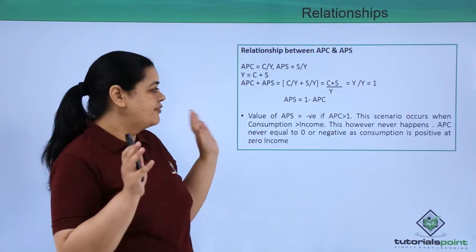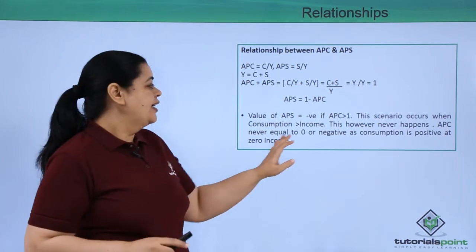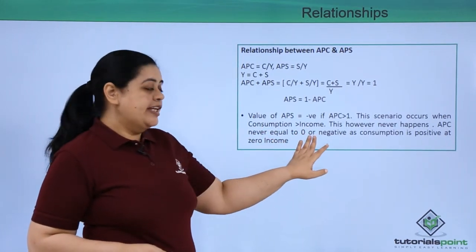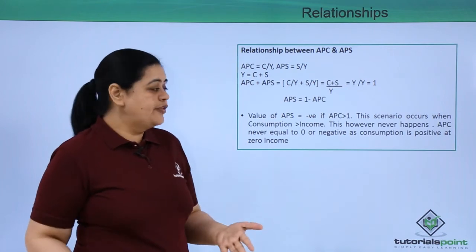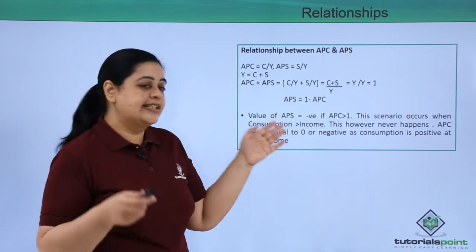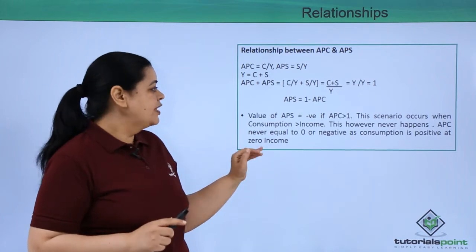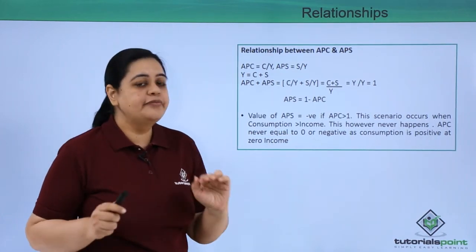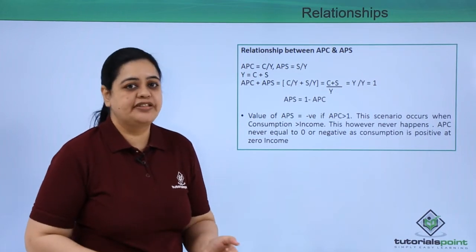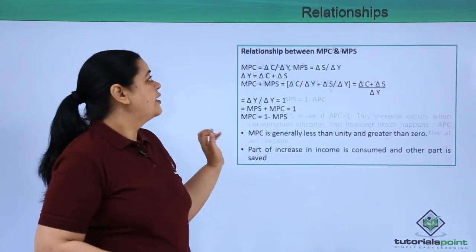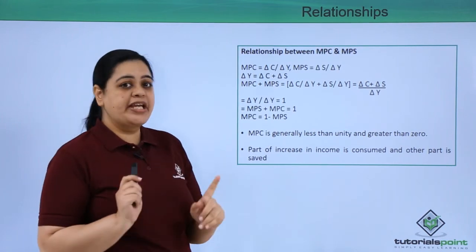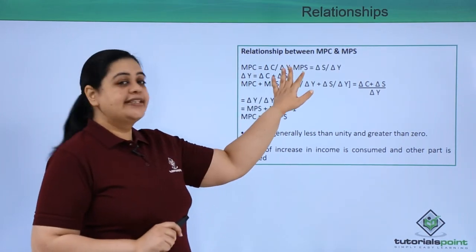Generally in the economy this never happens. APC would never be zero because you cannot live without consumption, and it would never be negative since consumption is always positive — even at zero income, you have to consume to survive.